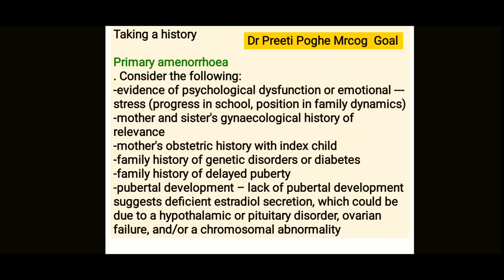When approaching a patient, you need to know all the differential diagnoses and what to ask in the history of primary and secondary amenorrhea patients. For primary amenorrhea, ask about evidence of psychological dysfunction or emotional stress, and the mother's and sisters' gynecological history — this will give an idea about constitutional delay and guides treatment.